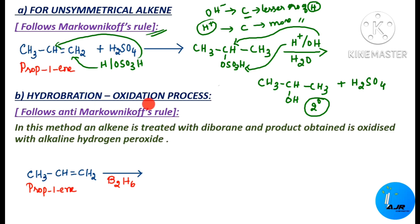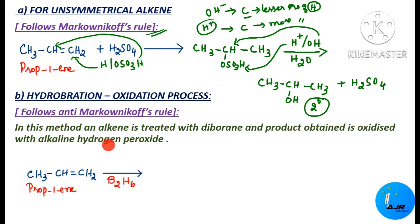The next one is the hydroboration-oxidation process, which takes place on the basis of anti-Markovnikov's rule — just the opposite of Markovnikov's rule. Here, hydrogen attacks the carbon with fewer hydrogen atoms and OH attacks the carbon with more hydrogen atoms. In this method, an alkene is treated with diborane (B2H6) and the product obtained is then oxidized with alkaline hydrogen peroxide.